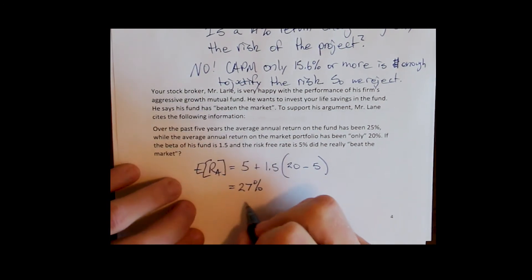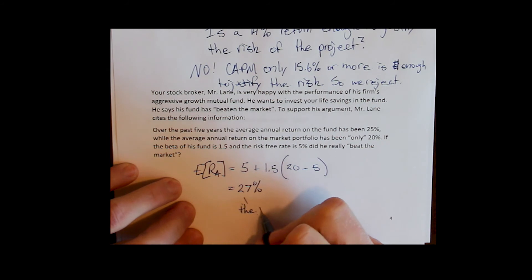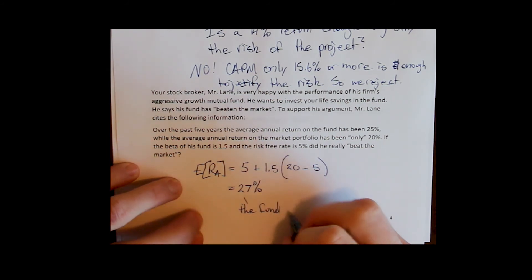In other words, CAPM says the fund should be earning 27% based on the risk it's taking.